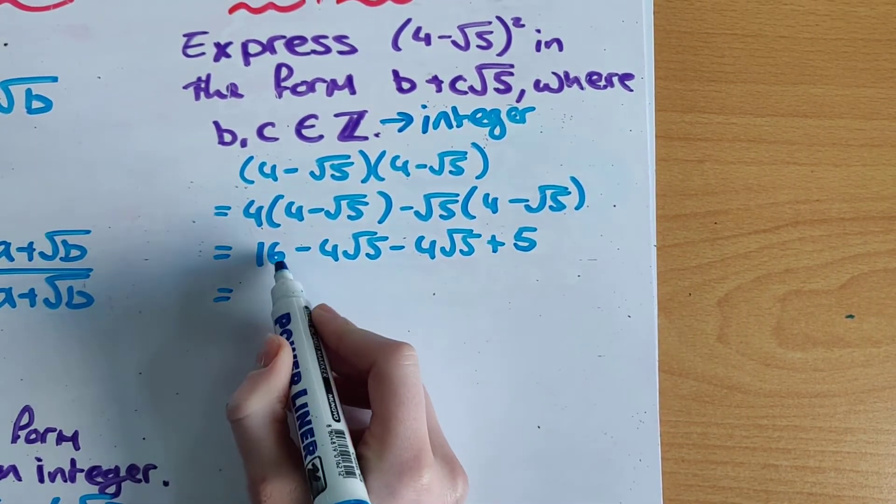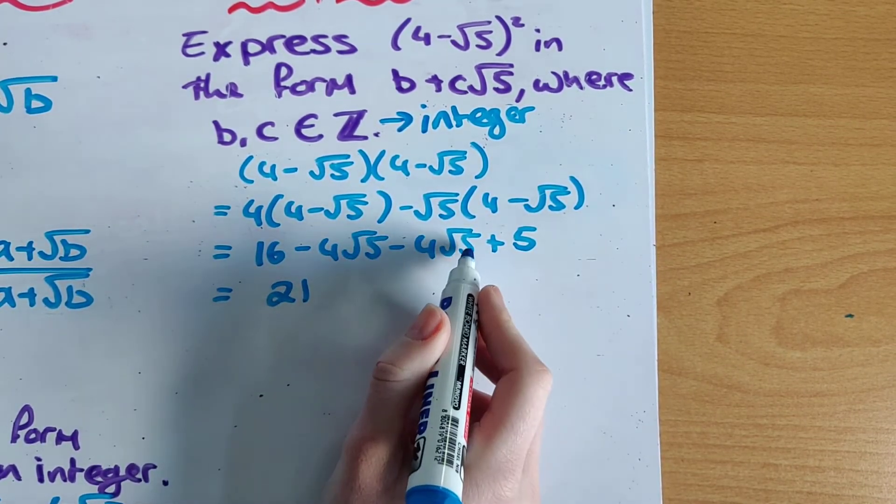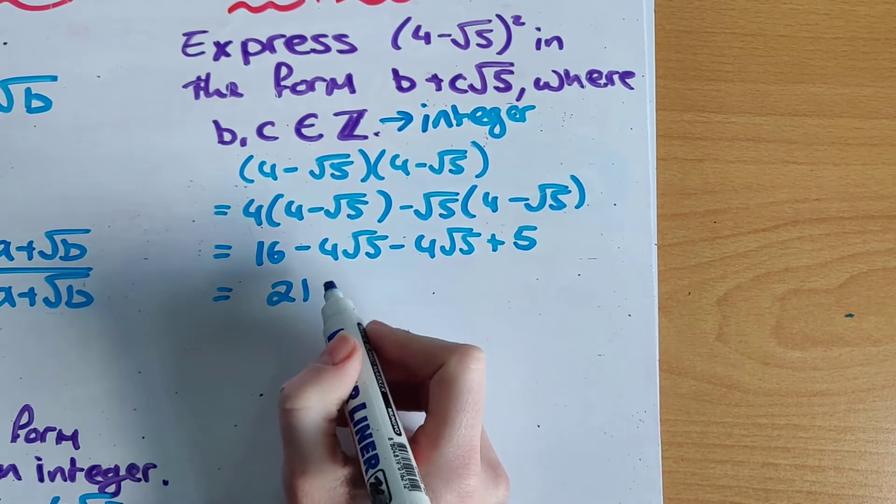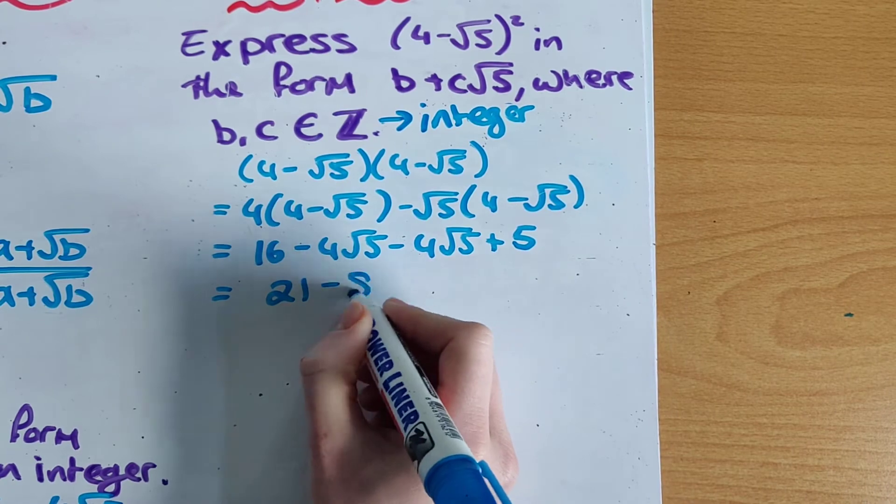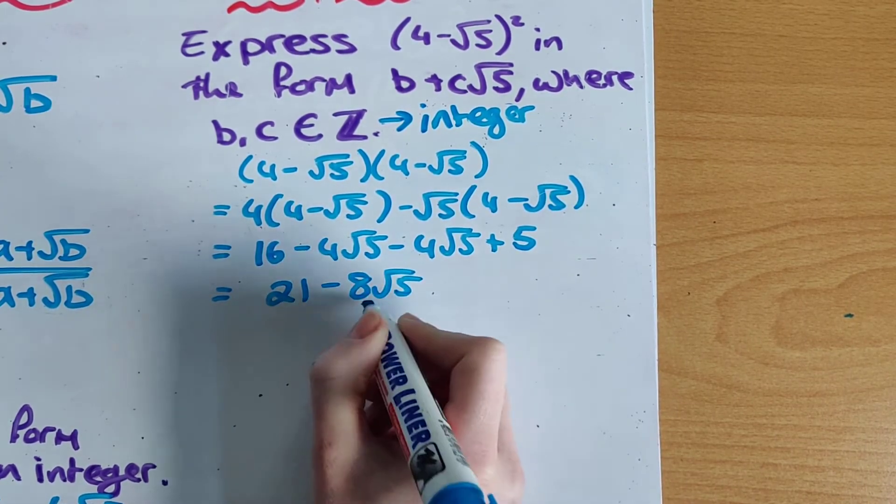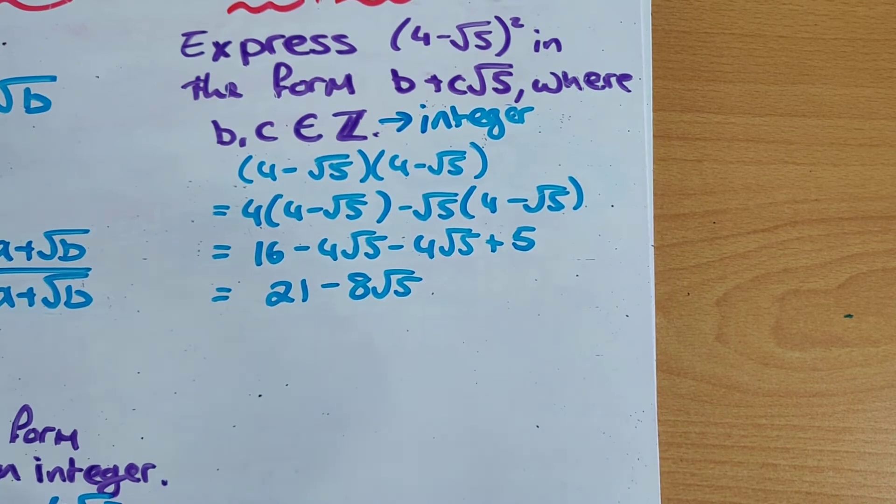So now we know we can add the constants together. So 16 and 5 gives me 21. When adding roots we need to make sure the number under the root is the same. And then we just add the constants in front. So minus 4 minus 4 is minus 8 root 5. And we know 21 and minus 8 are both elements of z because they're positive whole numbers.